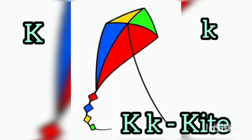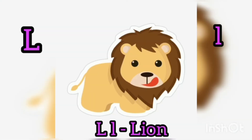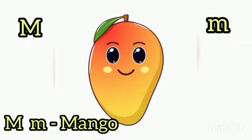K for Kite, Kite means tope. L for Lion, Lion means tope.